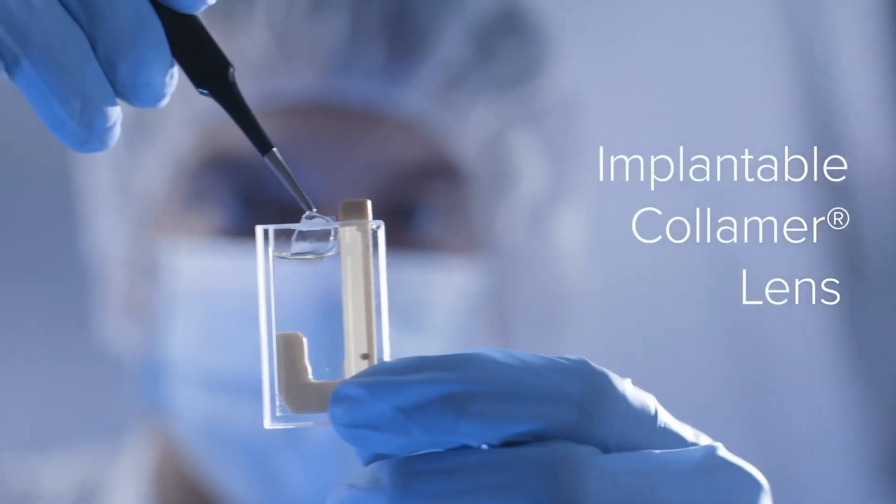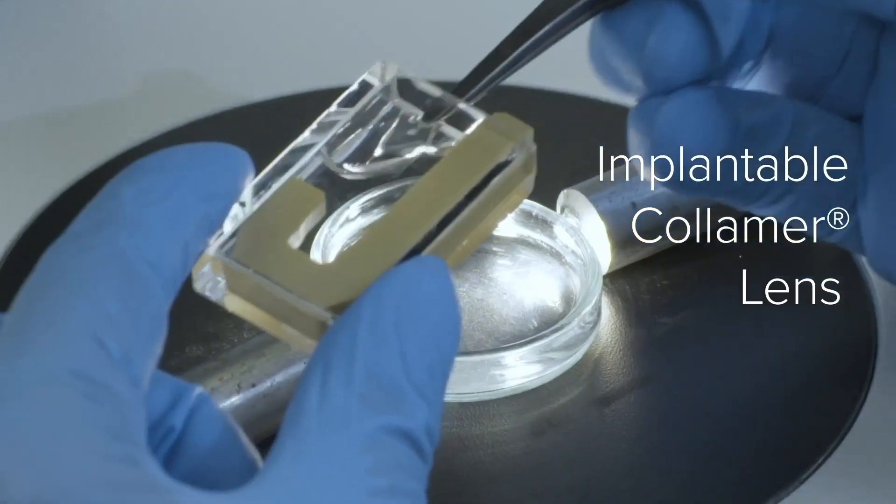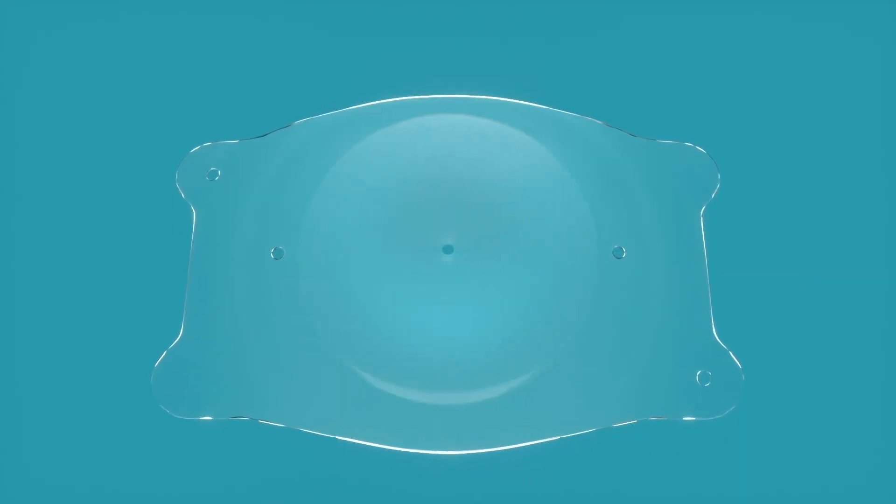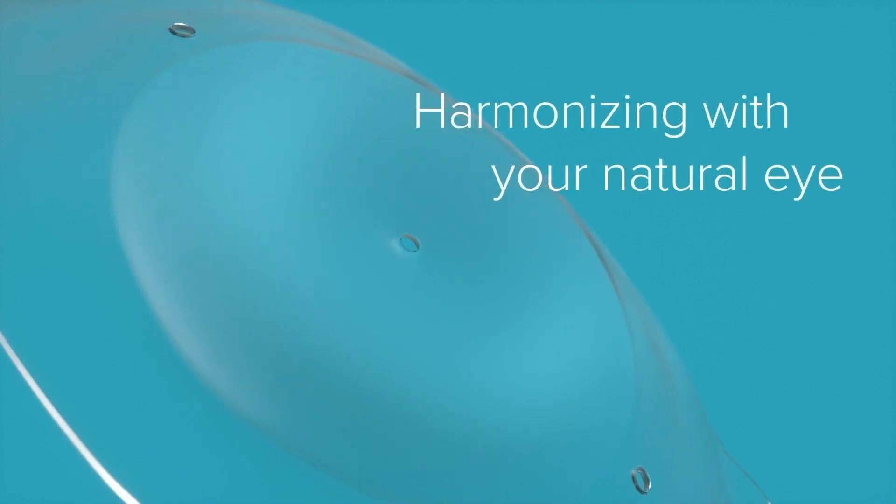EvoVizion ICL is an implantable Collamer lens that can correct common visual limitations like nearsightedness and astigmatism, freeing you from glasses and contacts while harmonizing with your natural eye.